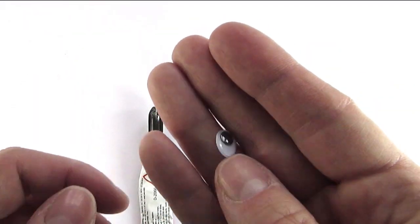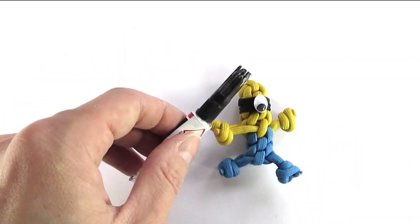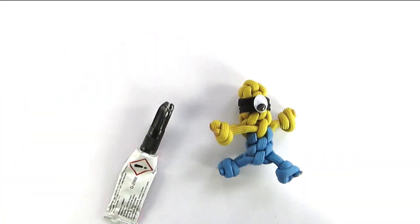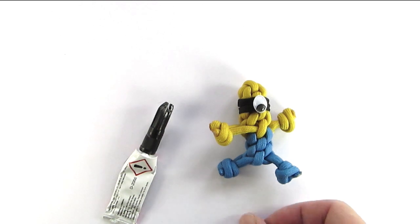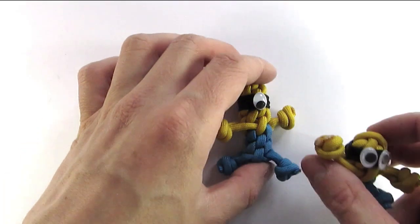The cherry on the minion is the googly eye, and I simply glue it onto the headband. And that completes the minion. So guys, thanks for watching this walkthrough. See you next time.